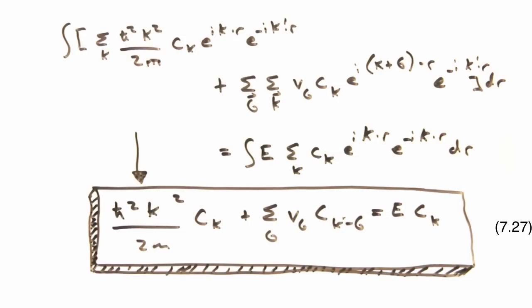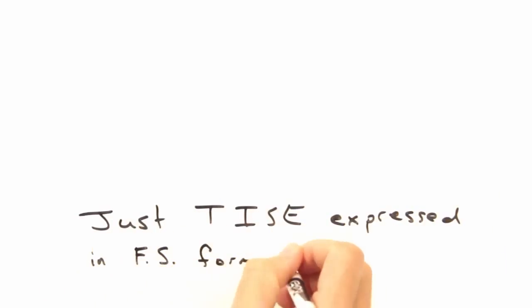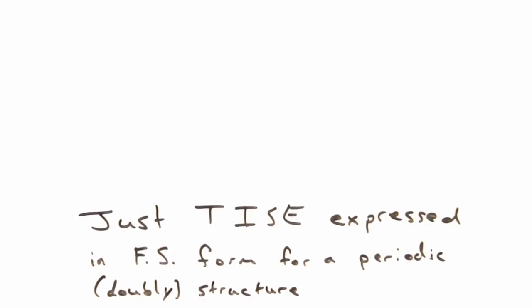Well, let's not get too high and mighty about the central equation. It's just the time-independent Schrodinger equation, expressed in a Fourier series form, to take advantage of the periodicity of our system. Okay, true. But there's some pretty cool things about this equation. I'll give you that.